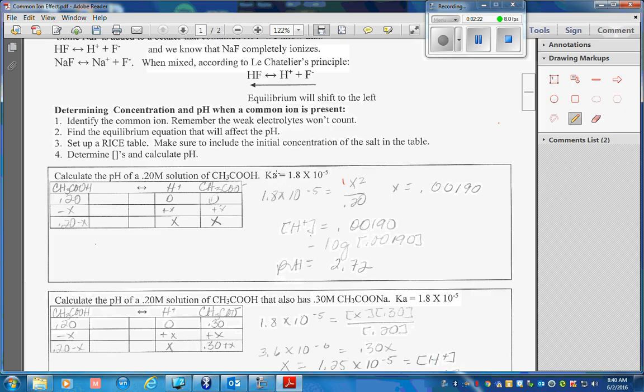Because the Ka value is so small, in our math portion, we may disregard the minus x here because it really will make no difference in our answer. When I do my math, I find x is equal to 0.00190.